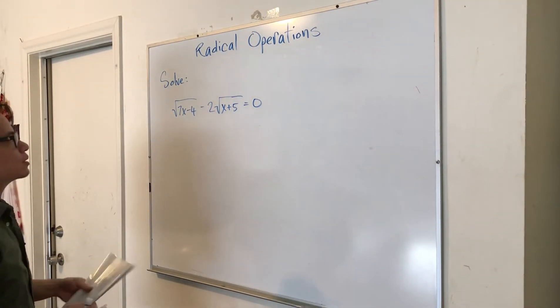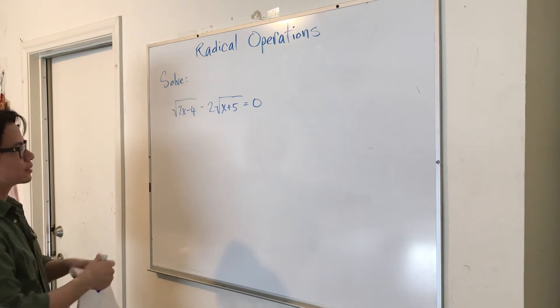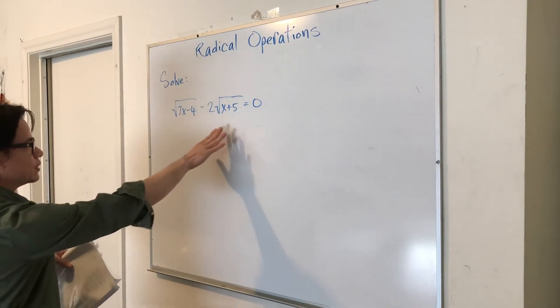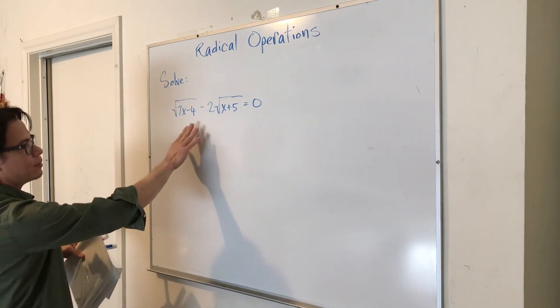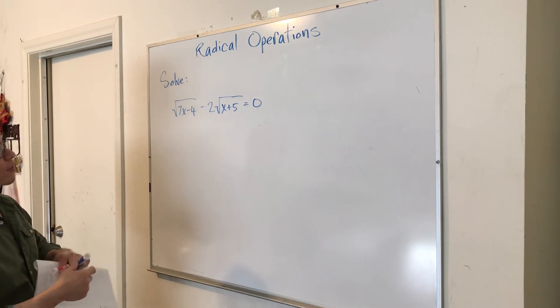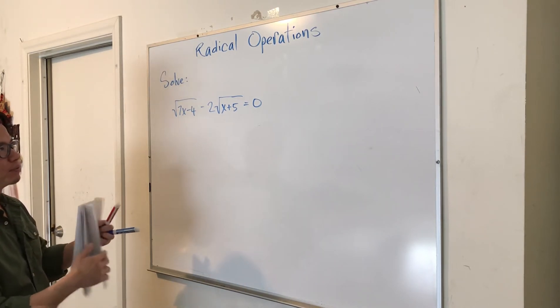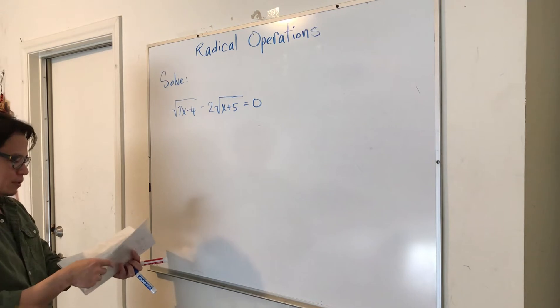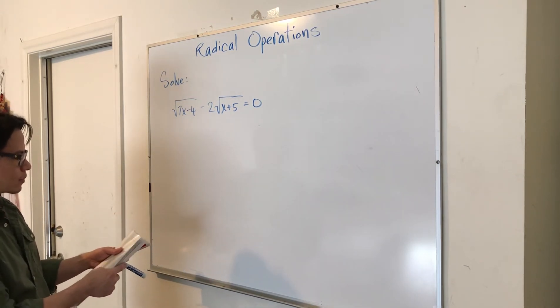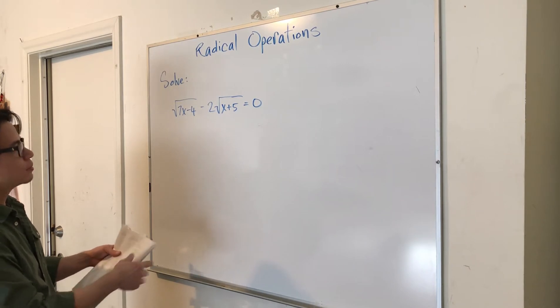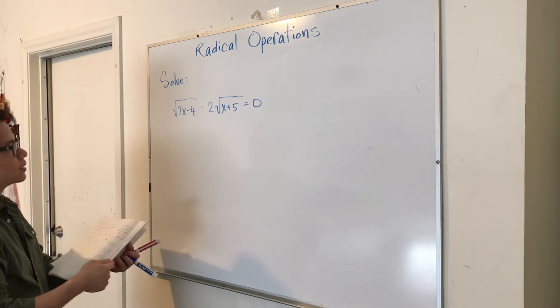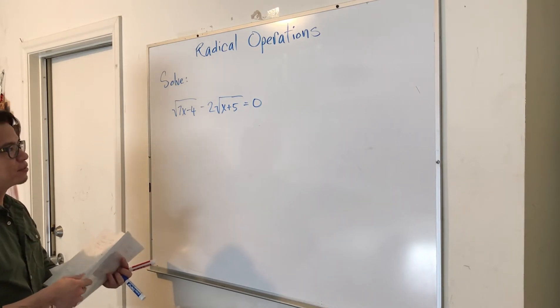So continuing on with solving for X. Here's the given, see if you can find out what X is ultimately, based on the three rules that we've just talked about. Remember the first rule says we need to isolate the radical, get the radical by itself. This is a special case if you haven't noticed already.